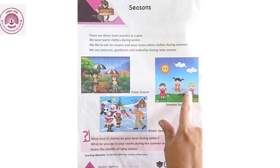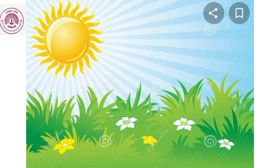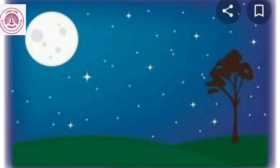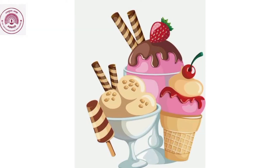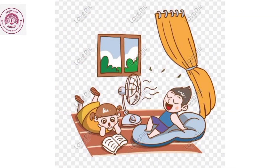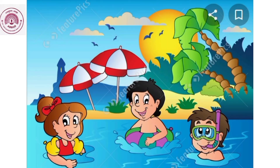Summer season. Summer season is the hottest season of the year. The sun shines brightly. The days are longer and nights are shorter during summer season. We wear cotton clothes during summer season like shirt, t-shirt, and frock. We like to eat cold things during summer season like ice cream and cold drinks. We use fans, cooler, and air conditioner to keep us cool. During summer season, children like to play in the swimming pool.